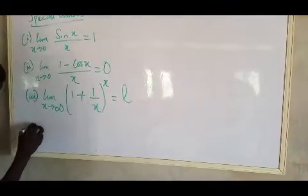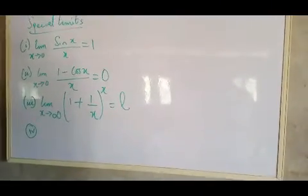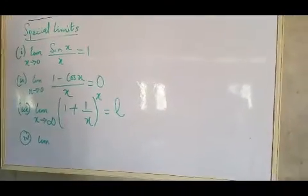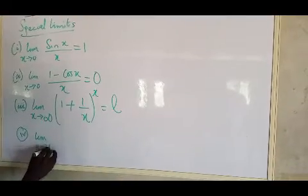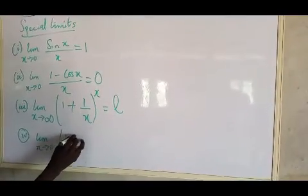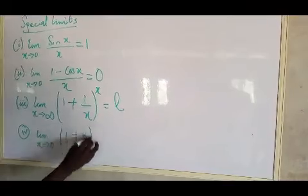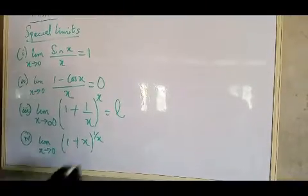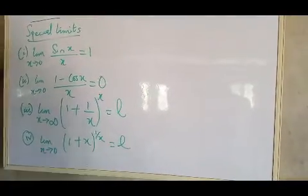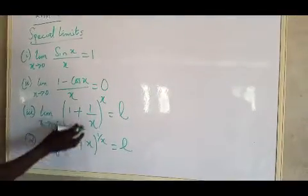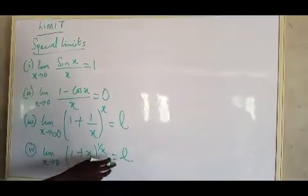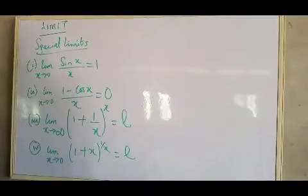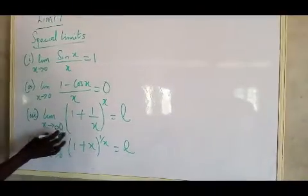The fourth special limit is: the limit as x tends to 0 of (1 + x)^(1/x) also gives e. You can see that the third and fourth are related — (1 + x)^(1/x) gives e when x approaches 0, while (1 + 1/x)^x gives e when x approaches infinity.